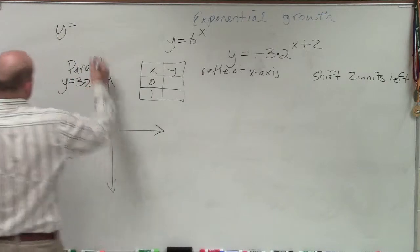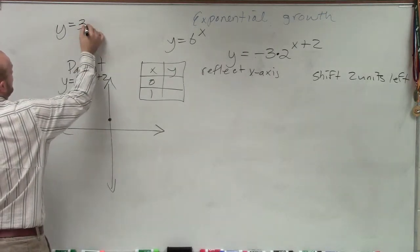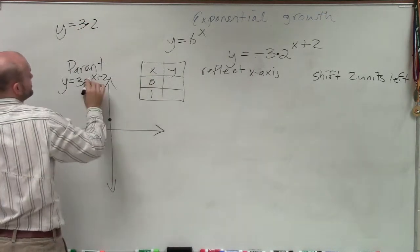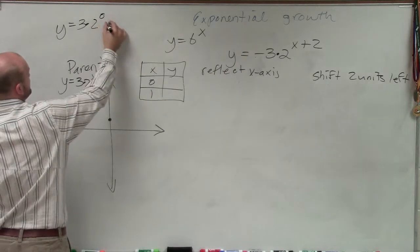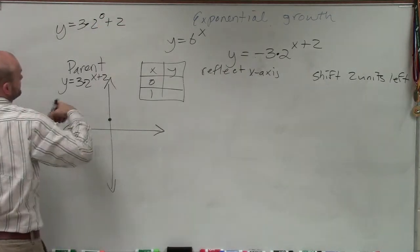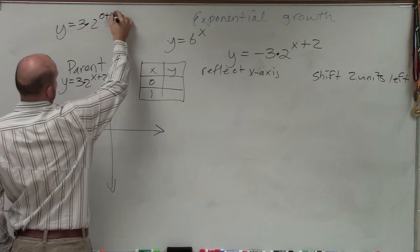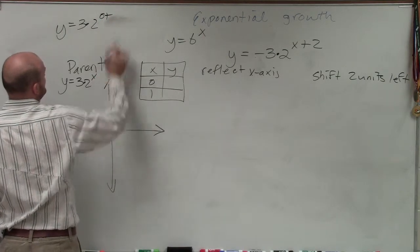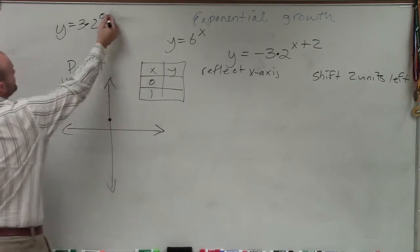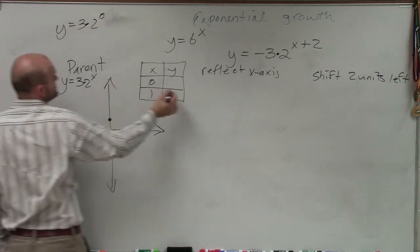So I take y equals 3 times 2 raised to my x, which I'll say, what about when x equals 0? No, not plus 2. It's just x. So 2 to the 0 is going to be 1. 1 times 3 is 3.